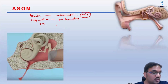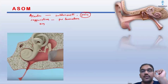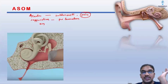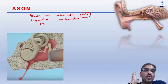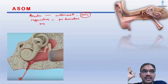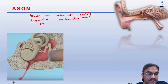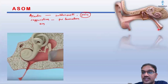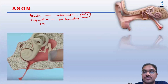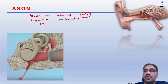Acute suppurative otitis media — whenever children have most recurrent episodes of upper respiratory tract infections, any upper respiratory tract infection can easily spread towards the middle ear through the Eustachian tube. The Eustachian tube opens into the nasopharynx, that means the upper respiratory tract, so from the upper respiratory tract, through the Eustachian tube, by local spread, infection can easily spread into the middle ear.